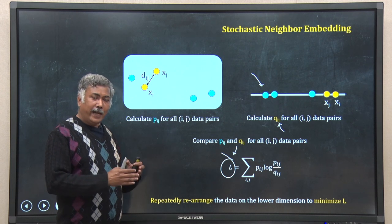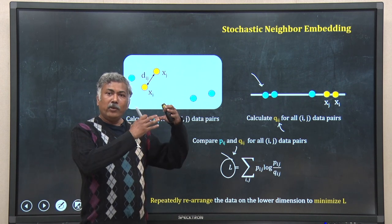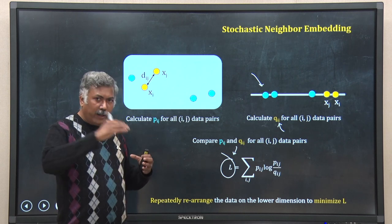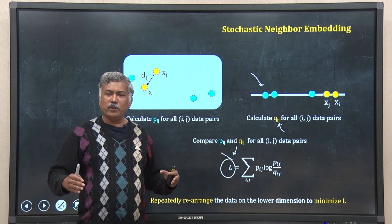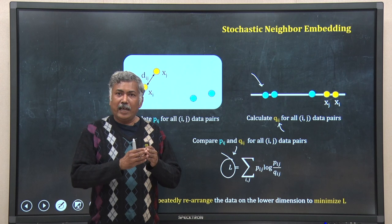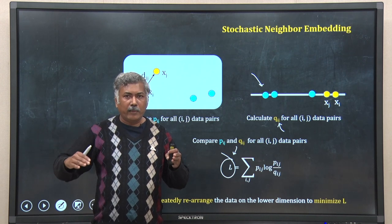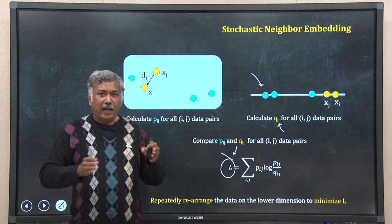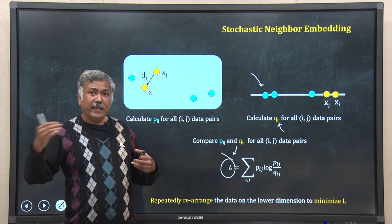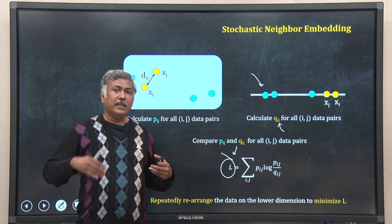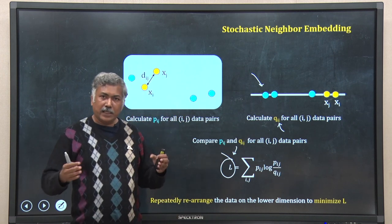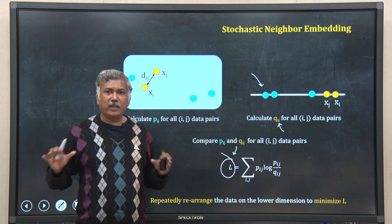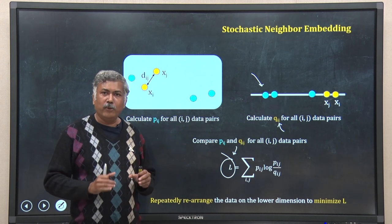Starting with a random embedding, the algorithm calculates q_ij, then computes the loss L. Then it rearranges the data in the lower dimension to minimize L, iteratively. It keeps rearranging the data, recalculating q_ij and L, until L is minimized. The embedding that gives the least cost is the final result — the best embedding achievable using this iterative optimization. That is Stochastic Neighbor Embedding.